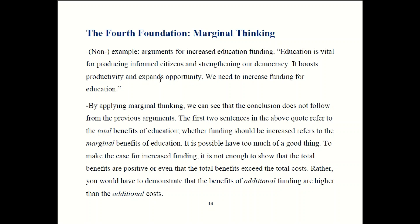For example, if you could say that for every one extra dollar we spend on education we get an extra two dollars of benefits to society — that's an argument you could make, because that refers to the marginal benefits being higher than the additional costs. So if you want to make that argument, you have to do it in the right way.